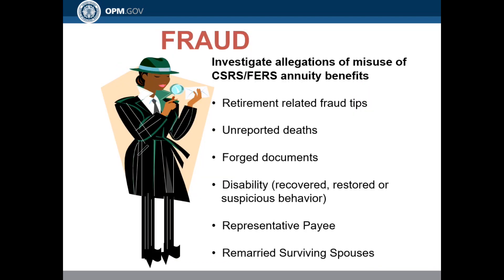The Fraud Department investigates allegations of misuse of the CSRS and FERS annuity benefits through retirement-related fraud tips, unreported deaths, forged documents, disability recovery, and suspicious behaviors reported to the Office of Personnel Management — including through a representative payee, or if someone has remarried and is receiving a survivor annuity as a surviving spouse before age 55.